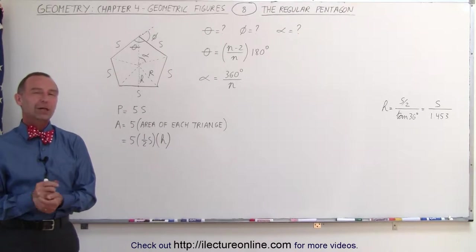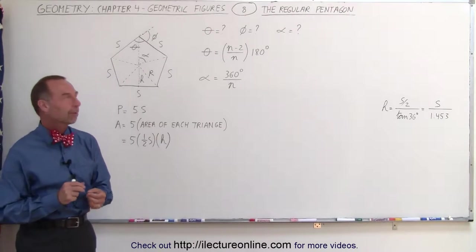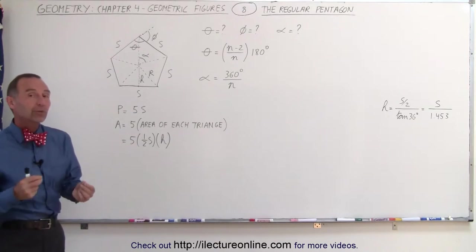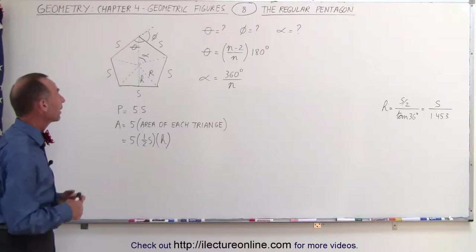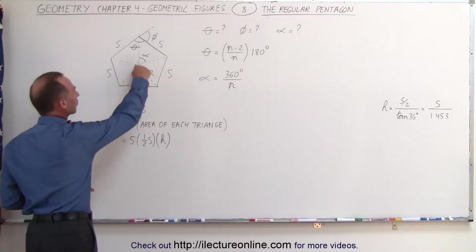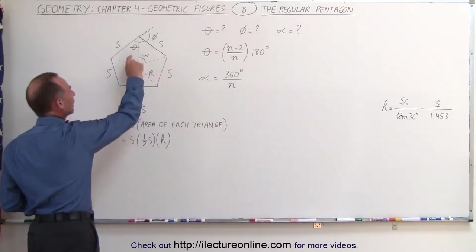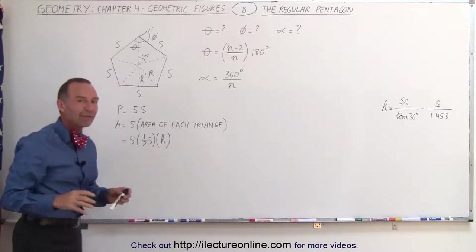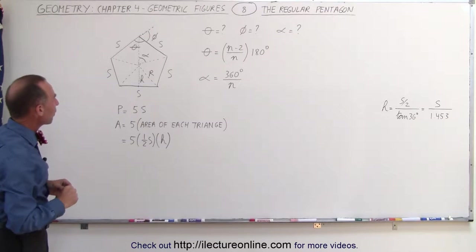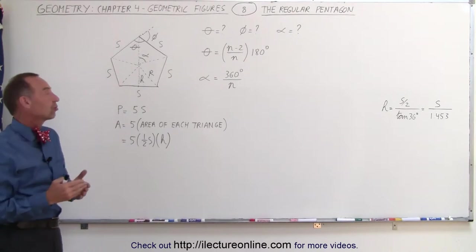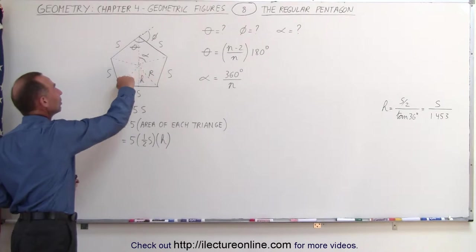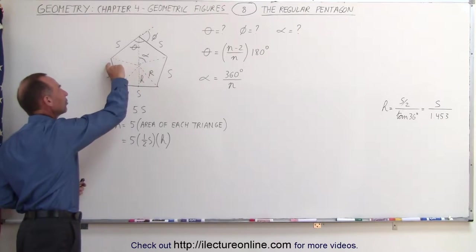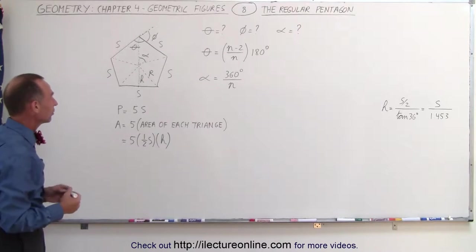Welcome to ElectronLine. Let's take a closer look at the regular pentagon. Here we have a pentagon with five equal sides, which makes it a regular pentagon. I've drawn some lines in here in such a way that you can represent a regular pentagon by five similar triangles. Each triangle is an isosceles triangle, meaning the two legs are equal in length, but they are not equal to the base of each triangle.